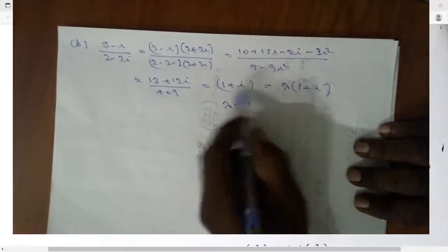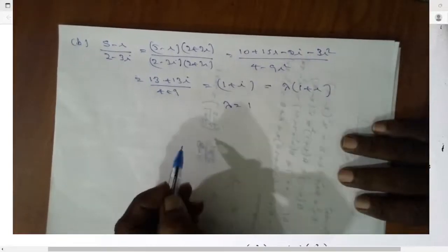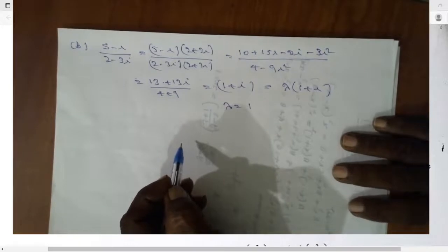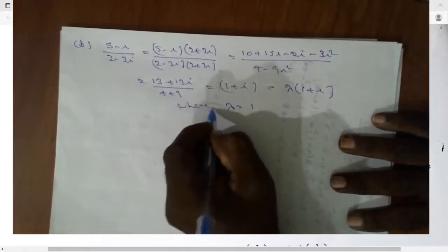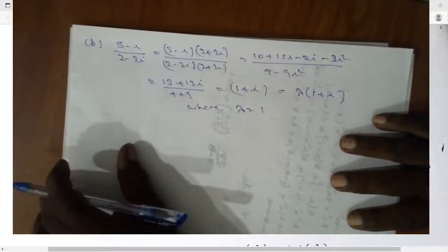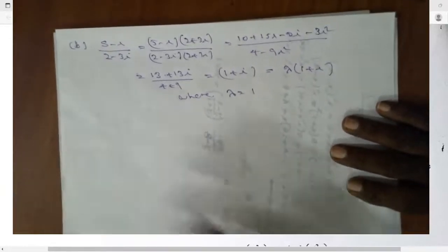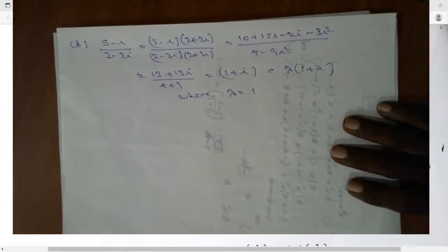If this equals lambda times 1 plus i, lambda equals 1. Where lambda equals 1.